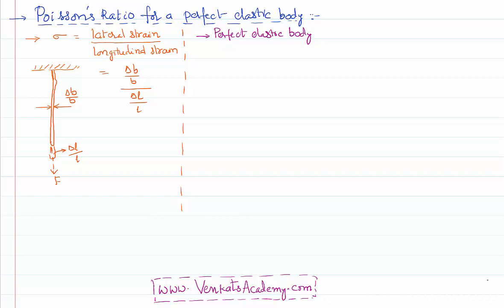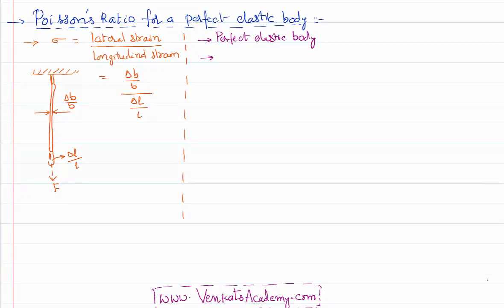A body is said to be perfectly elastic if it is able to regain its original state 100% when the applied external force is removed. That means the final dimensions of the body are equal to its initial dimensions. So for a perfect elastic body, the final volume equals the initial volume, or in other words, the change in volume delta V is equal to zero.